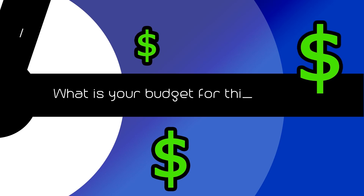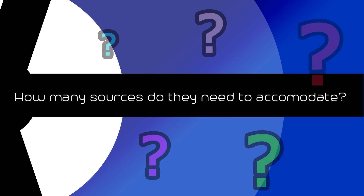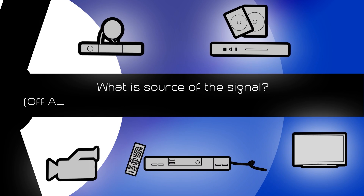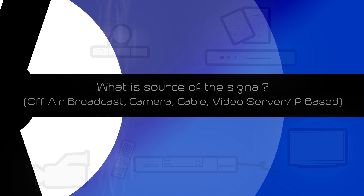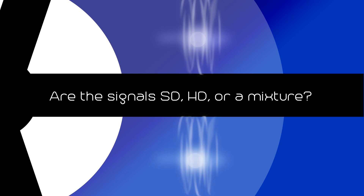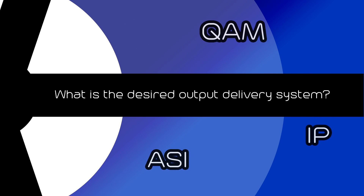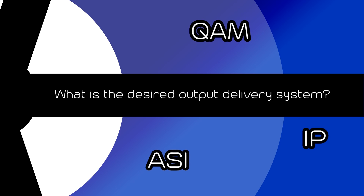Here are some questions to address with the customer: What is your budget for this project? How many sources do they need to accommodate? What type of signals? What is the source of the signal — off-air broadcast, camera, cable, video server, IP-based? What are the signals — SD, HD, or a mixture? What is the desired output delivery system — QAM, ASI, or IP?